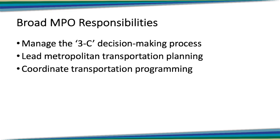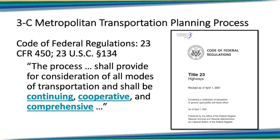There are basically three broad responsibilities for an MPO: first, to manage the 3C decision-making process; second, to serve as the lead planning agency for metropolitan decision-making in its metropolitan area; and third, to coordinate transportation programming in that metropolitan area. That's the distinction between planning and programming. Many activities bleed across all three responsibilities.